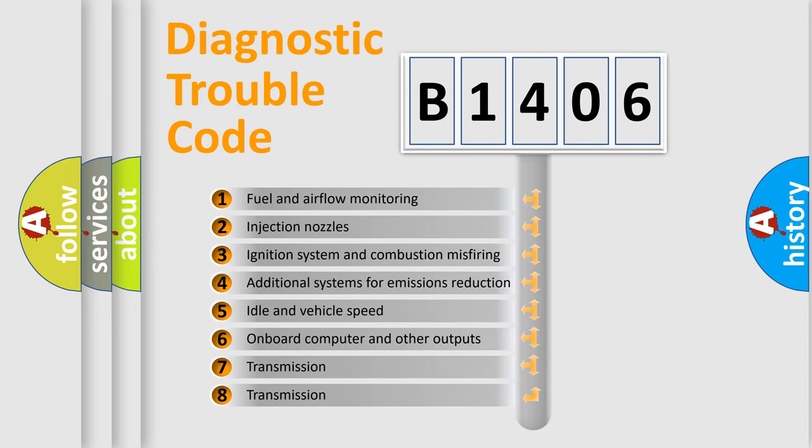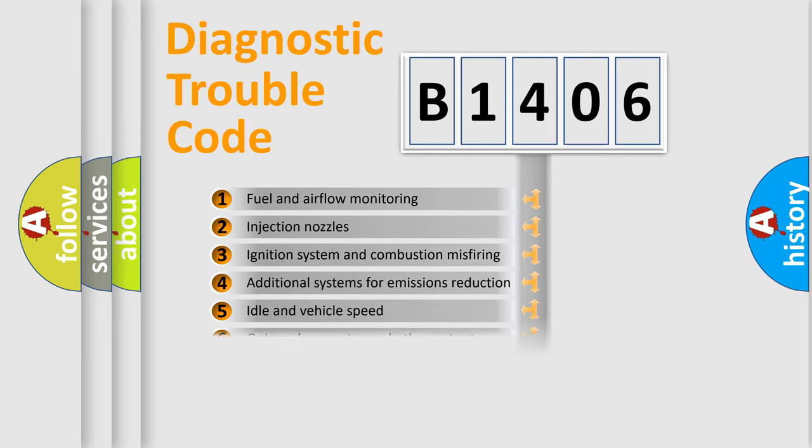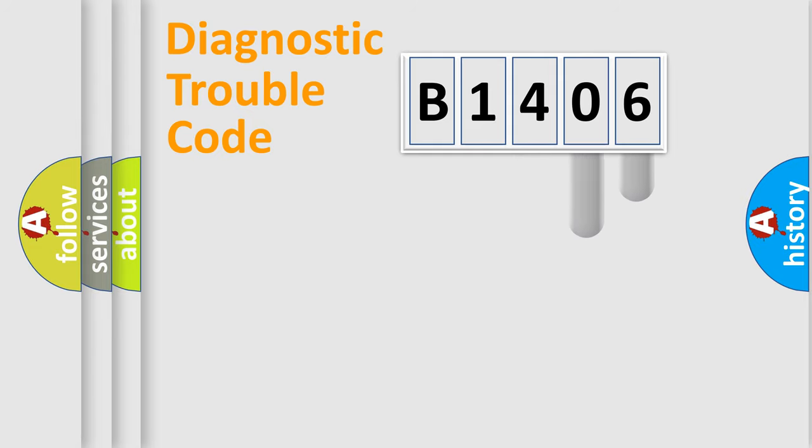The third character specifies a subset of errors. The distribution shown is valid only for the standardized DTC code. Only the last two characters define the specific fault of the group.